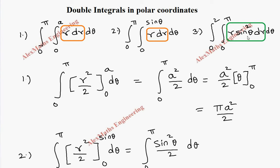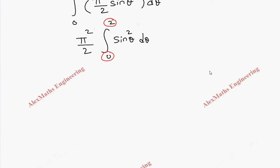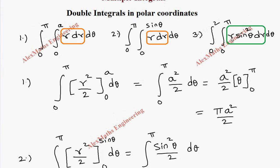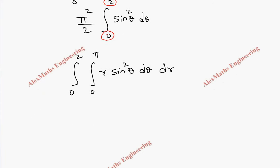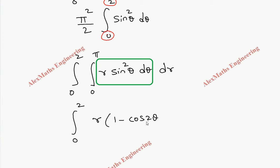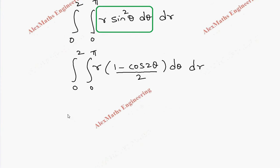The correct order is: first integrate sin²θ dθ from 0 to pi, then dr. So we rewrite the question as integral 0 to 2, integral 0 to pi, r sin²θ dθ dr. We integrate with respect to θ first; r is treated as a constant. Since we cannot integrate sin²θ directly, we apply the trigonometric formula: sin²θ = (1 − cos 2θ) / 2.